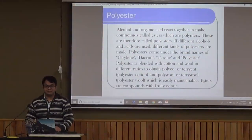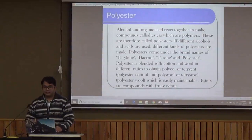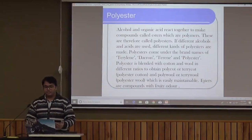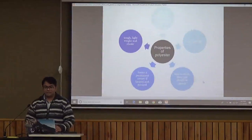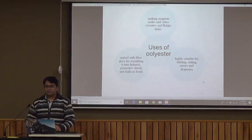Polyester is the polymer of ester. Esters are formed when alcohols and organic acids react to form these compounds, and their polymers are polyester. If different alcohols and acids are used, we can obtain different kinds of polyesters like terrylene, dacron, tirilene, etc. When we blend polyester with cotton, we call it polycotton. If we blend it with wool, we call it polywool. If terylene is blended with wool, we call it terrywool. Its uses: it is tough, lightweight, and elastic; resistant to pests and chemicals; easy to wash; and forms a permanent crease if heated and pressed. Polyester is used to make magnetic audio and video tape, shirting, suiting, sarees, and is mixed with fiberglass to form helmets and protective sheets.